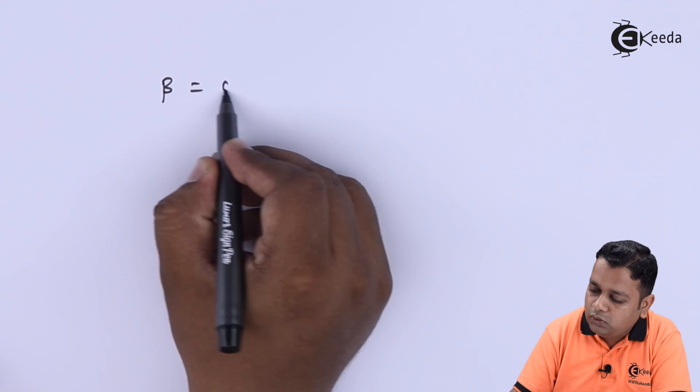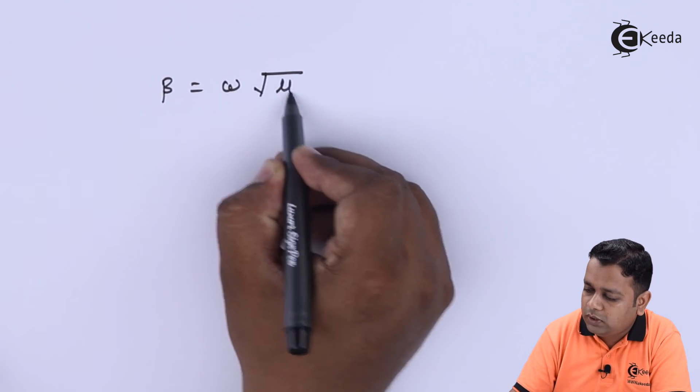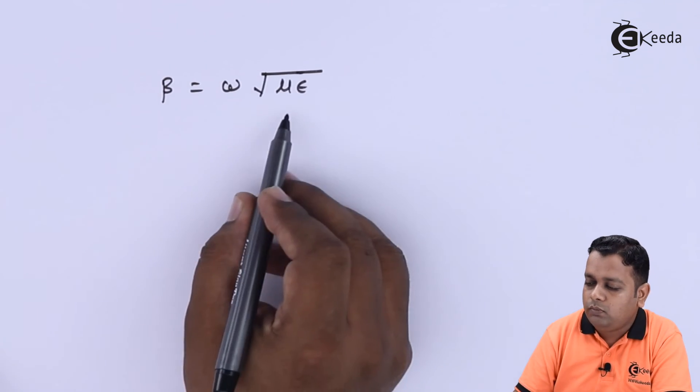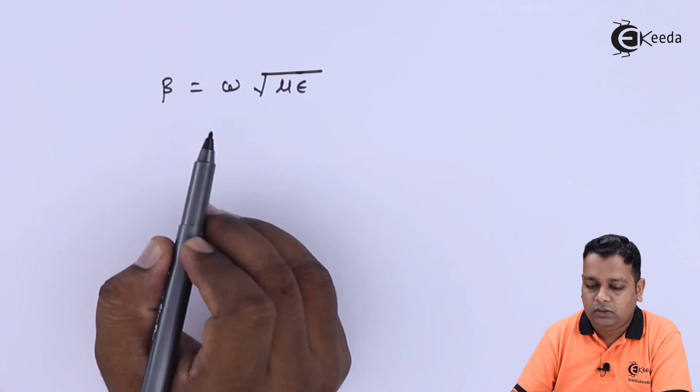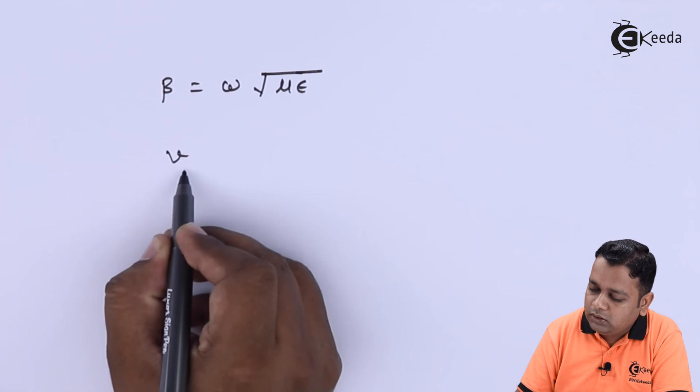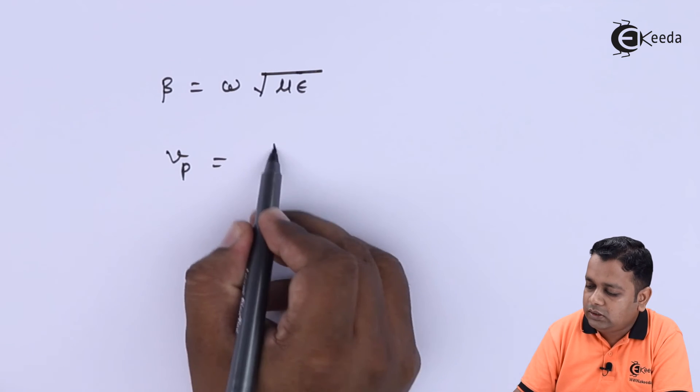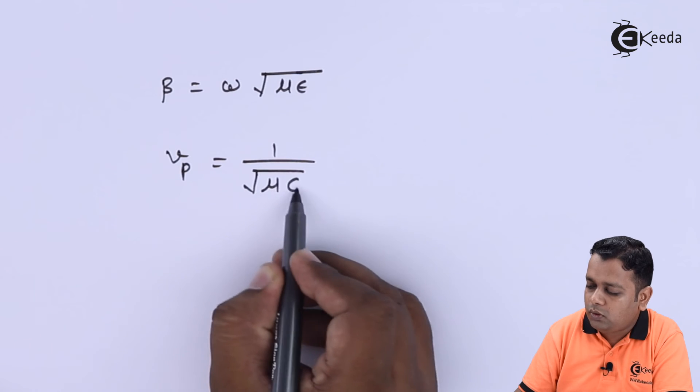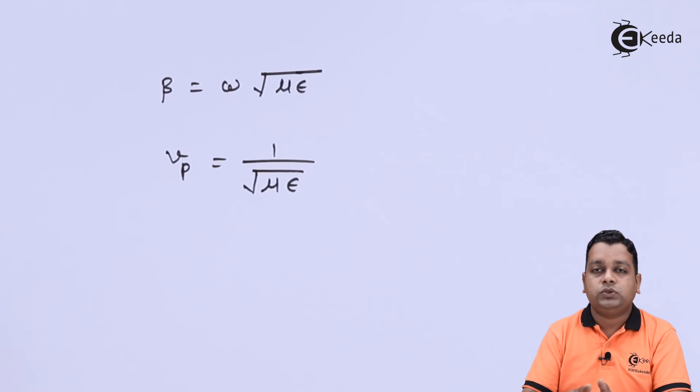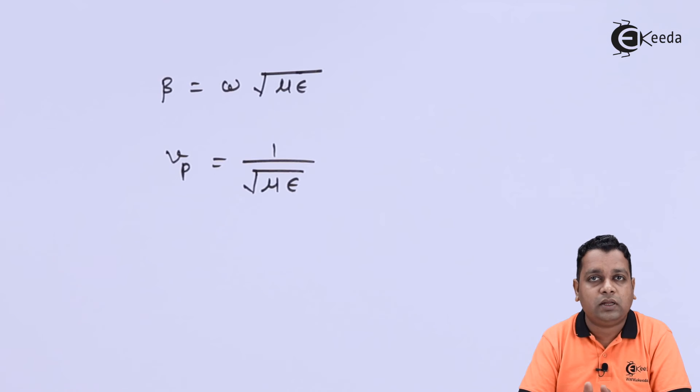β = ω√(με) where ω is the angular frequency. Further, the velocity of propagation can be simply given as vₚ = 1/√(με).